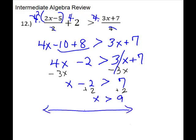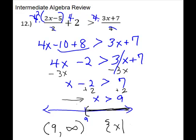For the number line graph, show your 9 and shade from 9 to infinity. This will have a parenthesis because there is no equals underneath. For interval notation, the leftmost point is 9 and it gets a parenthesis; it goes forever to the right, so that's to positive infinity, and infinity always gets a parenthesis. For set builder notation, use your solution set symbols — the set of all x such that x is greater than 9.